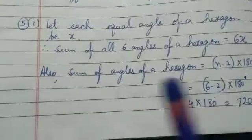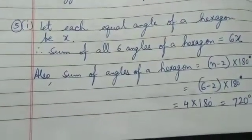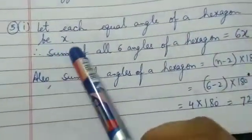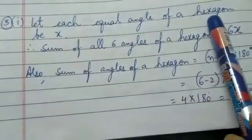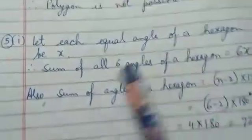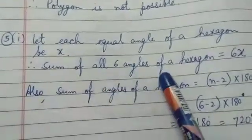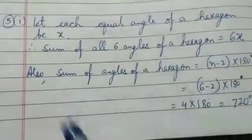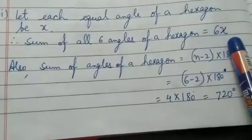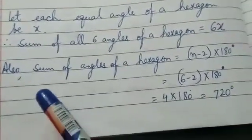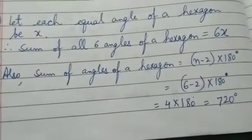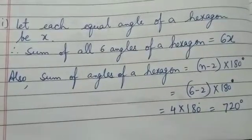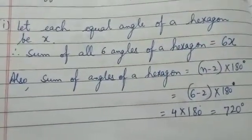So the question is each angle of a hexagon is equal. Let each equal angle of a hexagon be x. Since there are 6 angles in a hexagon, the sum of all 6 angles of a hexagon is 6x. If each angle is x, then all 6 angles together are 6x. Now we have a formula for finding the sum, which is (n minus 2) into 180 degrees, so we can easily find the sum of angles of a hexagon using the formula.